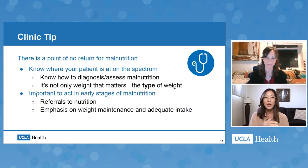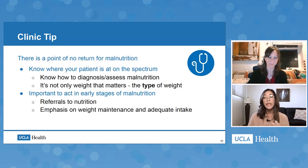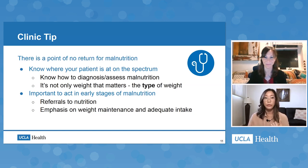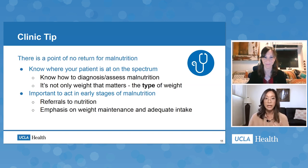Our second clinic tip: there is a point of no return for malnutrition. It's really important to be aware of where your patient is on the spectrum, know how to assess for malnutrition, and know that it's not only weight that matters but the type of weight that matters most. Malnutrition may be masked by fluid accumulation — a key indicator of nutrition deficiency and active inflammation, even if there's no overt weight loss. Act in early stages by sending referrals to nutrition and emphasizing weight maintenance and adequate intake from the beginning.